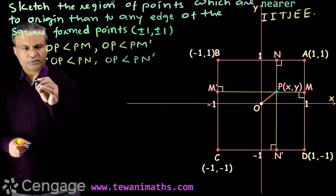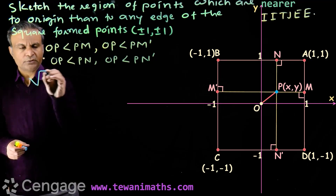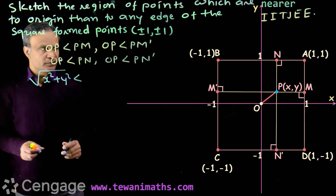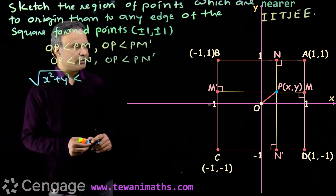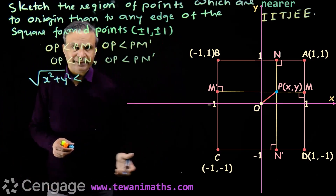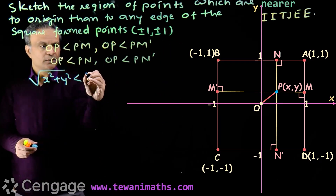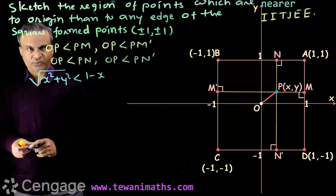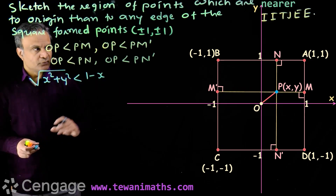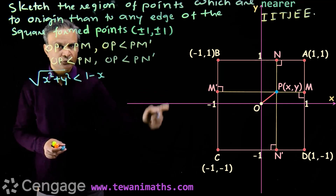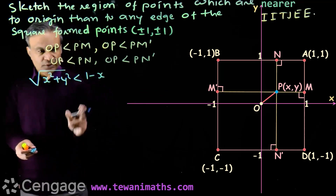So OP is less than PM. The distance OP is root of X squared plus Y squared, and the distance PM — the distance of point P from side AD — is 1 minus X, since 1 is greater than X.